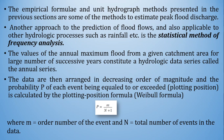The values of the annual maximum flood from a given catchment area for a large number of successive years constitute a hydrologic data series called the annual series. The data are then arranged in decreasing order of magnitude and the probability P of each event being equalled or exceeded is calculated by the plotting position formula — the Weibull formula: P = m / (n + 1), where m is the order number of the event and n is the total number of events in the data.